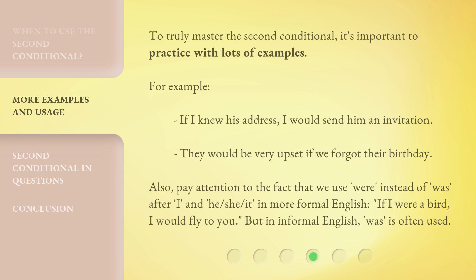Also, pay attention to the fact that we use 'were' instead of 'was' after 'I', 'he', 'she', and 'it' in more formal English. For example: 'If I were a bird, I would fly to you.' But in informal English, 'was' is often used.